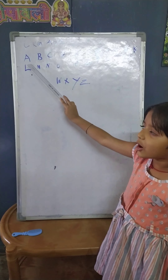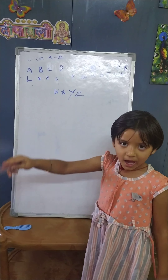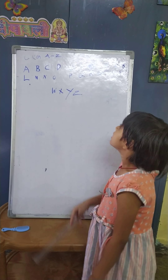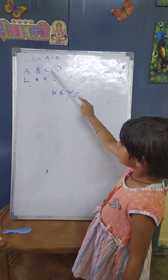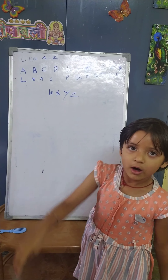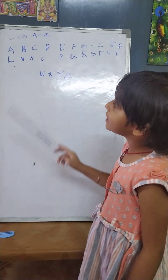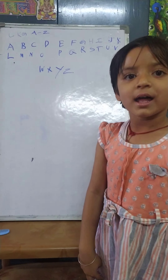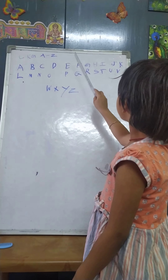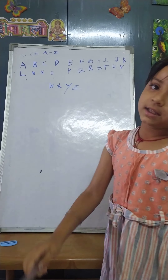B for ball, C for cat, D for dog, E for elephant, F for fish,